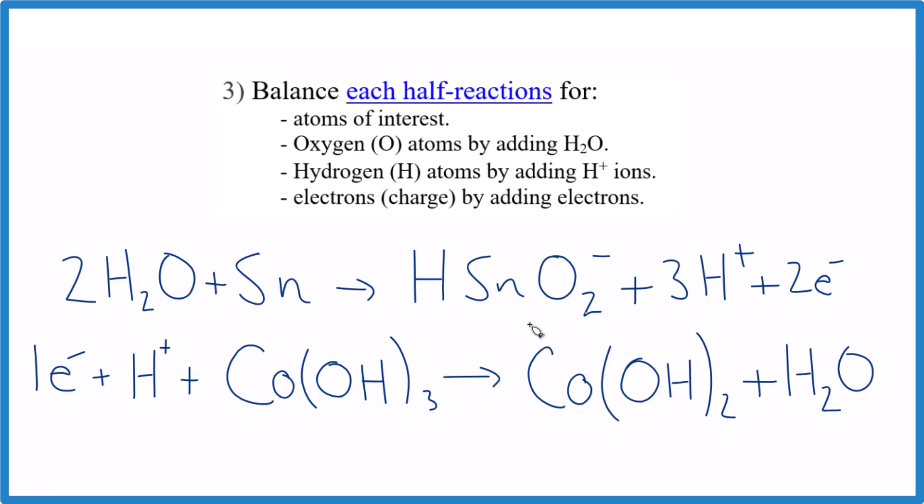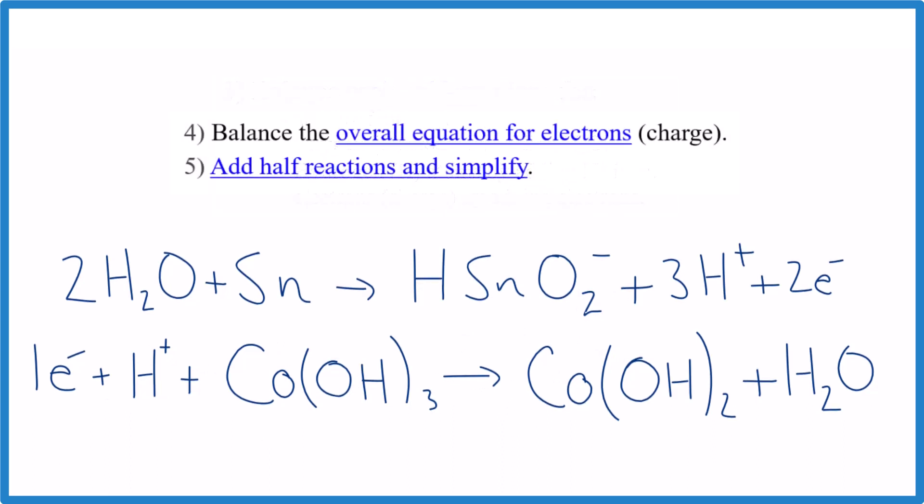These are the balanced half reactions. At this point you should stop and make sure you have the same number of atoms on each side and that the charge is balanced. For example, two times two is four hydrogens here, we have one plus three—that's four. Charge balances out, atoms balance out here as well. If you do this now, you'll catch any problems.